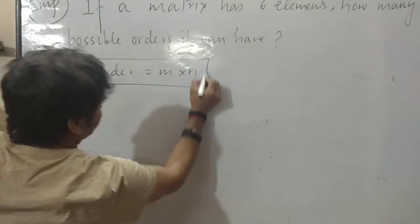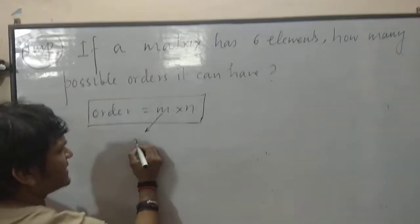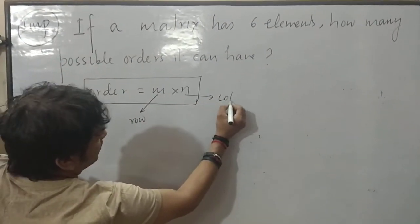Block it for board exams. Here I know what is order. Order is M into N. M stands for row. N stands for column.